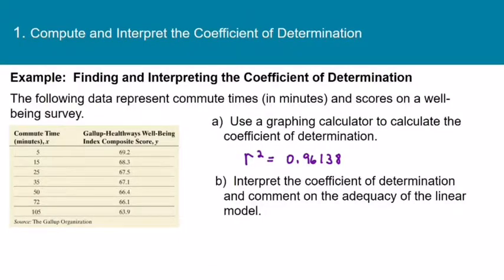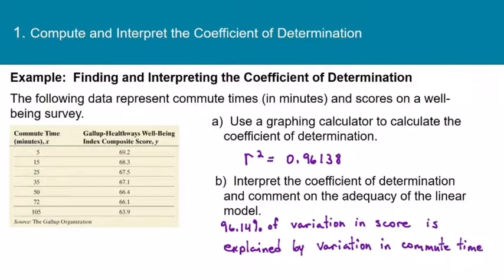Okay, so I've hidden the calculator now. And r squared was 0.96138. It says interpret the coefficient of determination and comment on the adequacy of the linear model. So we know that the coefficient of determination tells us what percent of the variation in y can be explained by variations in x. So I'm going to write that about 96.14% of the variations in the well-being score can be explained by variations in commute time.